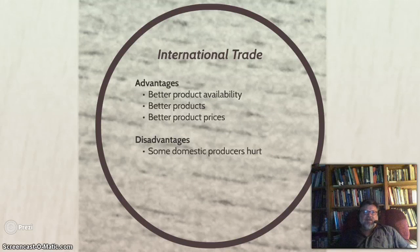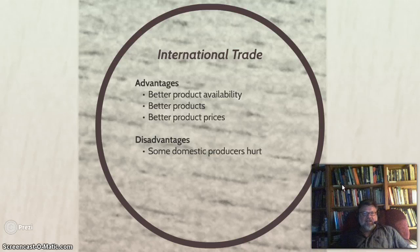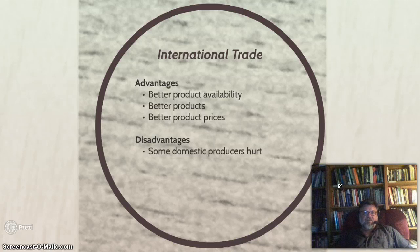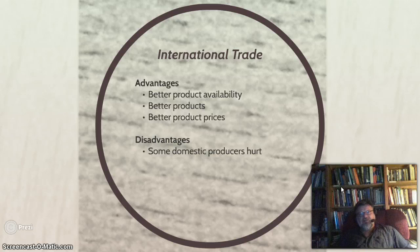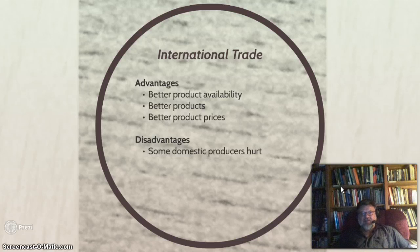International trade has several advantages: better product availability, better products because of international competition, and better product prices. An automobile built in China may be at a much better price than one built in Detroit because Chinese workers get paid much less per hour. Some of the disadvantages are that domestic producers are hurt. If we're importing cars from Brazil or China, people working in auto manufacturing in the United States may suffer. If we're importing agricultural products from Argentina or Mexico, some of our own farmers may be negatively affected.